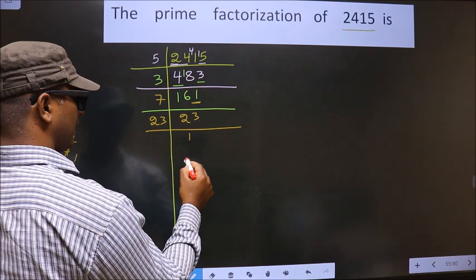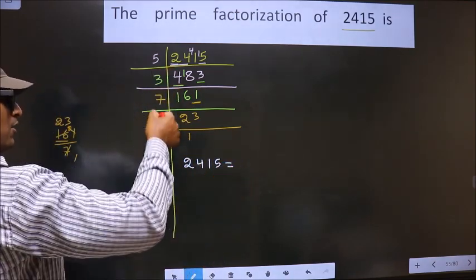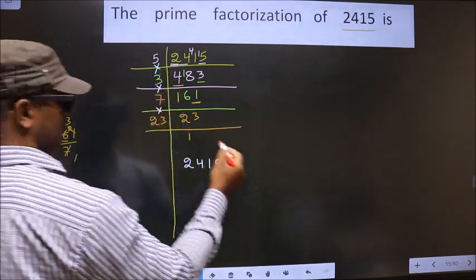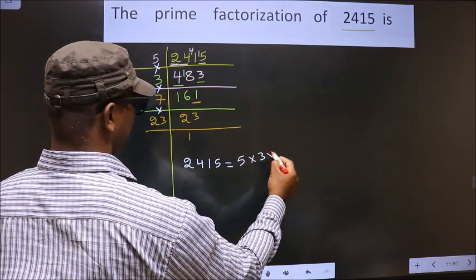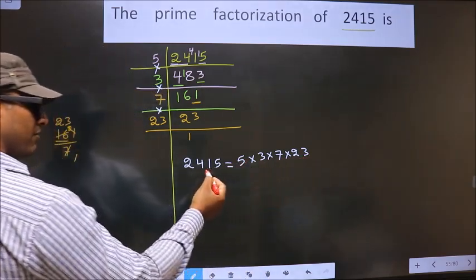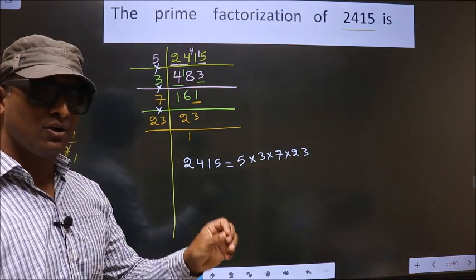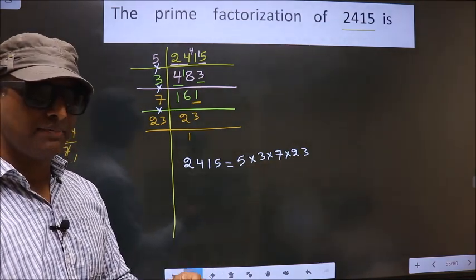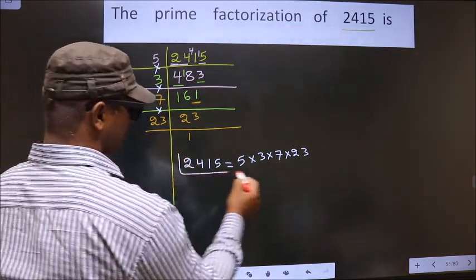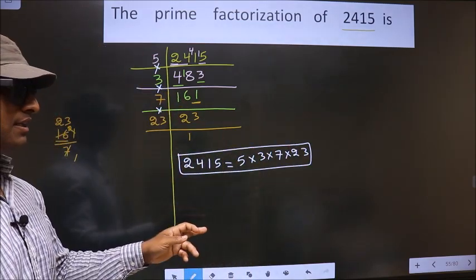So now the prime factorization of 2415 is the product of these numbers. That is 5 into 3 into 7 into 23. So this is the prime factorization of 2415. This is also called the product of prime numbers of 2415. So this is our answer. Am I clear?